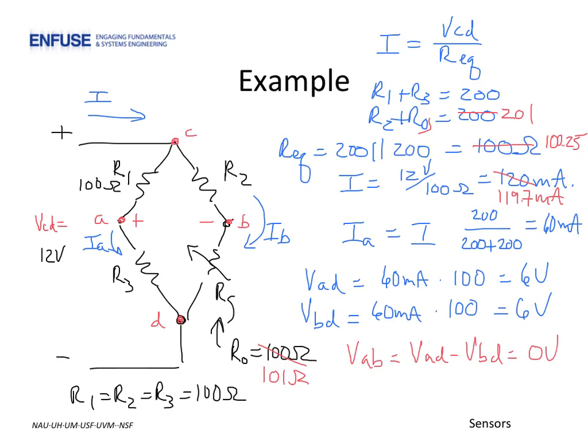Now, on the left branch, we have R1 and R3, which total 200. In the right branch, R2 and Rg total 201. So the current is not evenly divided between these two any longer. The calculation for IA becomes the total current 119.7 times 201 over 401, which turns out to be 60 milliamps. So nothing really has changed in the left branch.